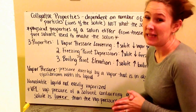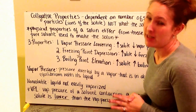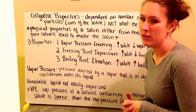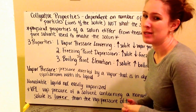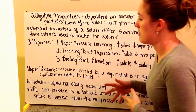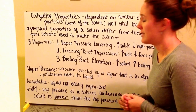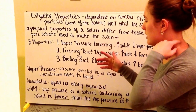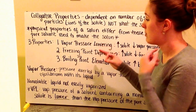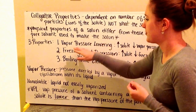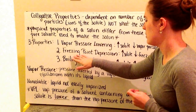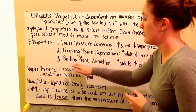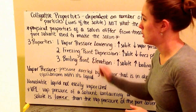This video is about colligative properties. It's going to be a little longer than our normal videos because it's a bigger topic. I have quite a few examples for you. Colligative properties are going to get broken into three major parts: vapor pressure lowering, freezing point depression, and boiling point elevation. They'll be in this order.